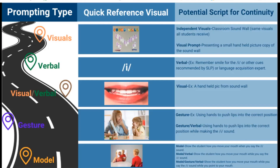In this hierarchy, we start at the top with independent visuals. That might look like a classroom sound wall that all students have access to — it might be pictures of the sounds being made, like lips pictures. Those sound pictures could also be brought down as a visual prompt. So if students have a vision impairment like Mila and she can't see that sound wall, then she has that right there at the table with her.